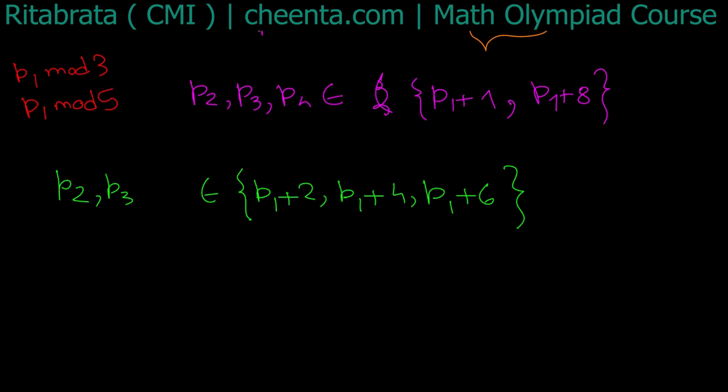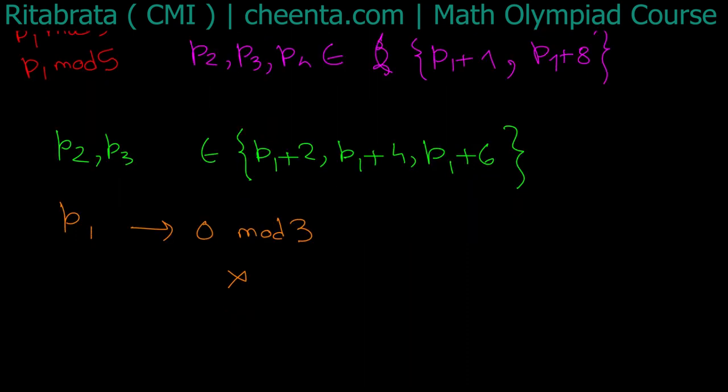Let's see what are the possibilities. Now p1 cannot be 0 modulo 3 because p1 is greater than 5 and it is prime. Can p1 be 1 modulo 3 or 2 modulo 3? Let's see. p1 congruent to 1 modulo 3 implies this set. What does this give modulo 3? p1 + 2 is congruent to 0 modulo 3, p1 + 4 is congruent to 2, and p1 + 6 is 1. It's okay.